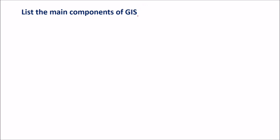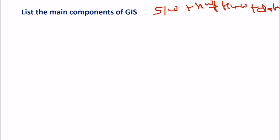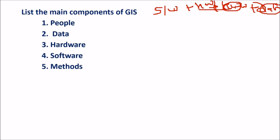What are the main components of GIS? GIS is software plus hardware plus humanware. So you also have one more part — dataware. Software, hardware, along with the people working with this and with certain spatial reference data. The main components of GIS are people, data, hardware, software, and methods.